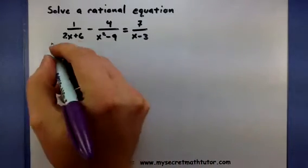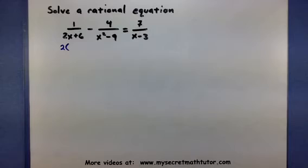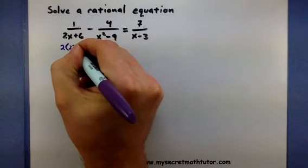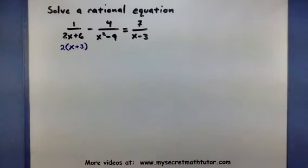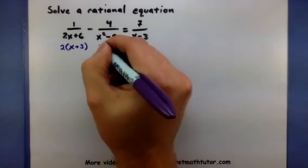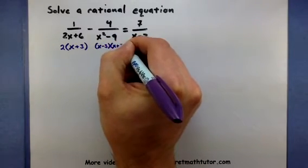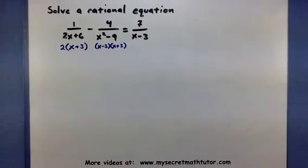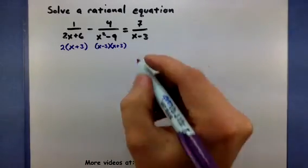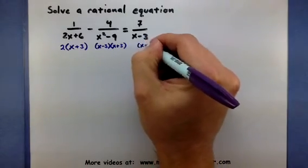So looking at this first one, I see that I can take a 2 out, which means that this denominator is basically 2 times an x plus 3. X squared minus 9 is the difference of squares. So this is an x minus 3 and an x plus 3. And of course, the last denominator can't be factored at all. This is just an x minus 3.